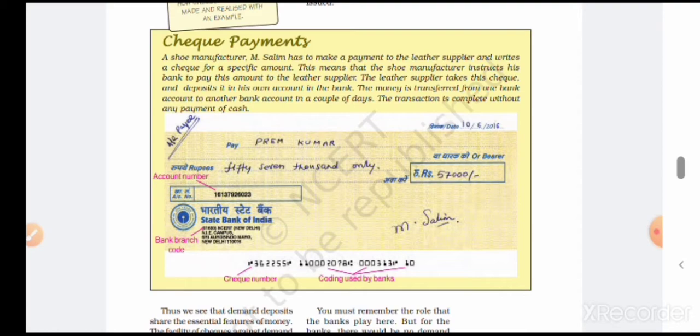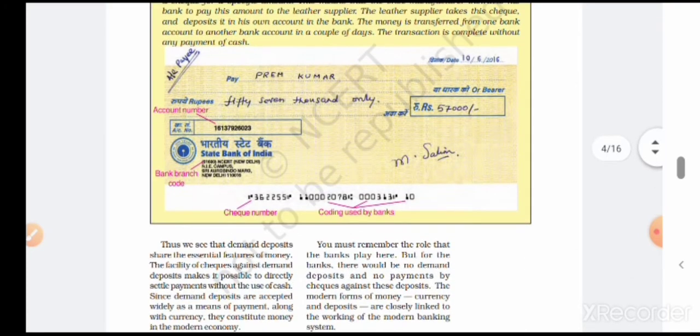At the bottom of the check, a special number is written that is read by a device called MICR - Magnetic Ink Character Reader. These digits are written with specific ink recognized by this device. When the check is kept inside the MICR, it verifies whether the check is original or not. Banks introduced these systems to reduce crimes.